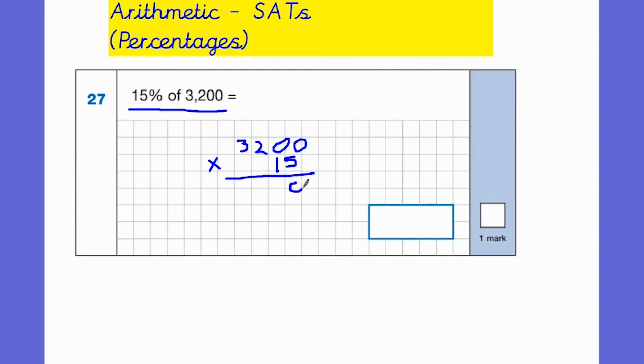So 0 times 5 is 0. 0 times 5 is 0. 2 times 5 is 10, so 0 down and carry the 1. 3 fives are 15 and 1 is 16. So that's the first bit done.